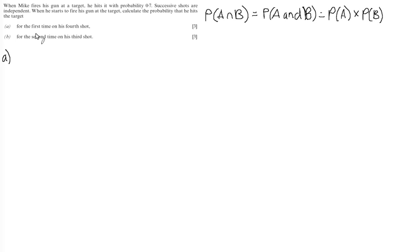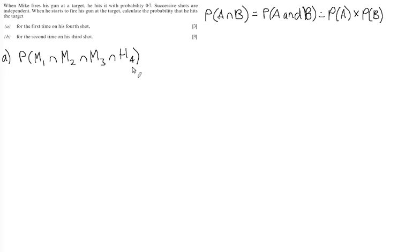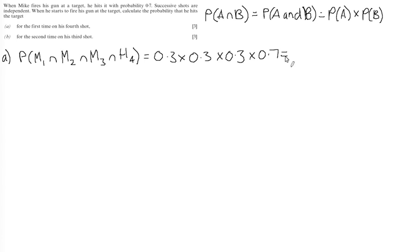Looking at Part A, the probability that he hits for the first time on his fourth shot means we need a miss on shot one, a miss on shot two, a miss on shot three, and finally a hit on shot four. We calculate this by multiplying all these probabilities together: 0.3 × 0.3 × 0.3 × 0.7, which gives an answer of 0.0189.